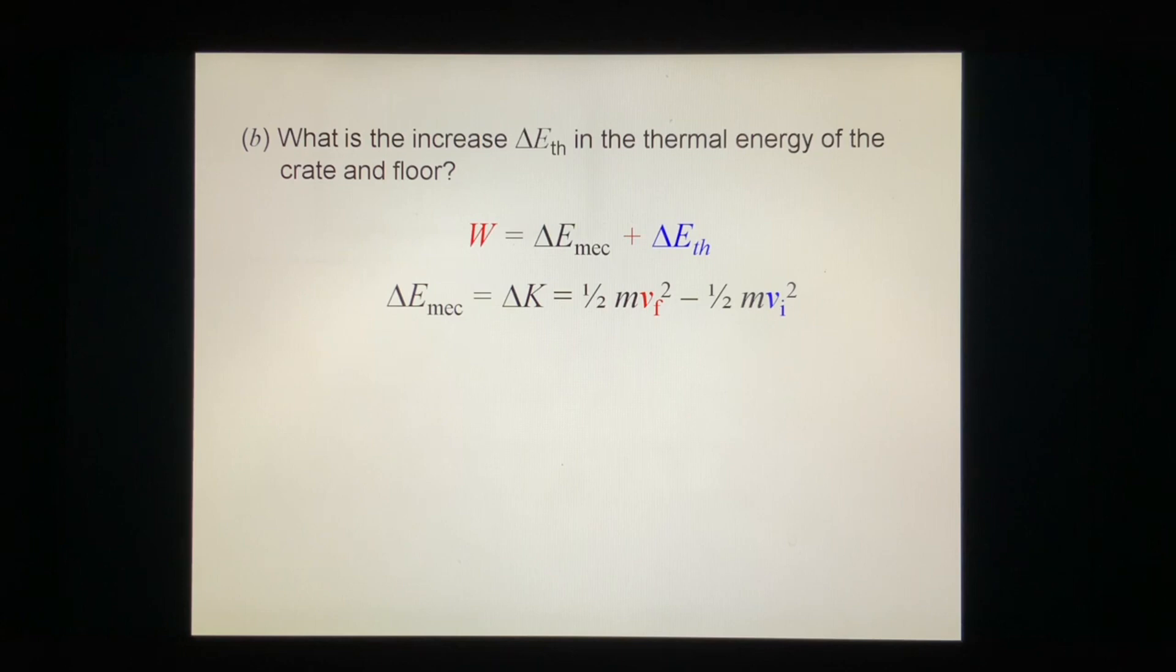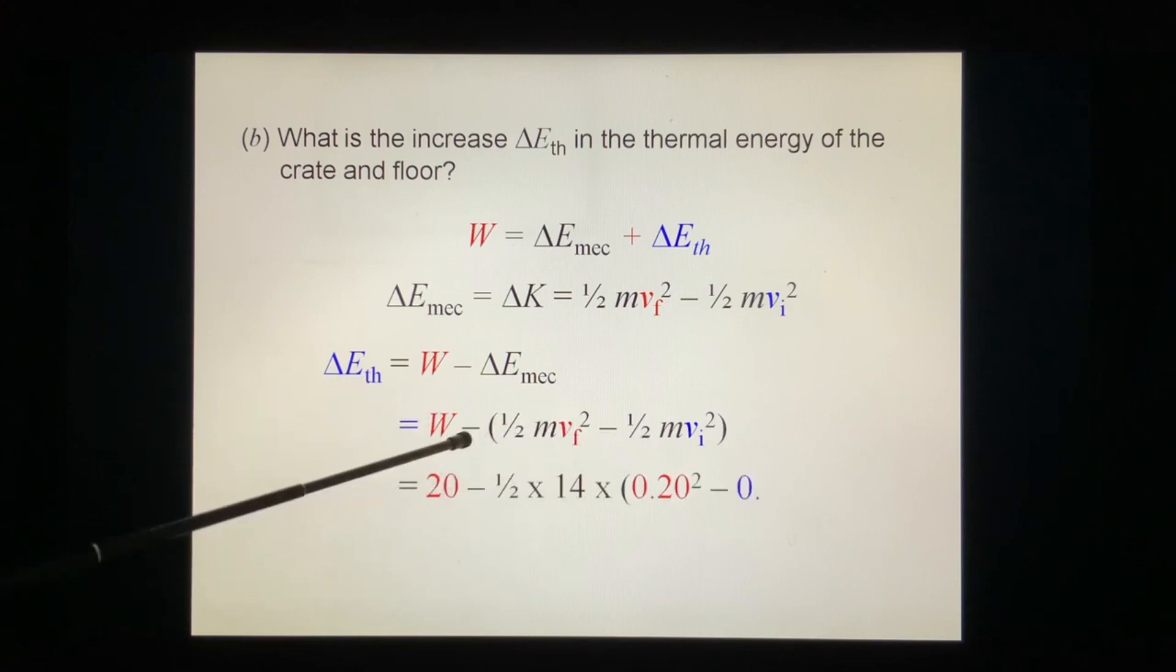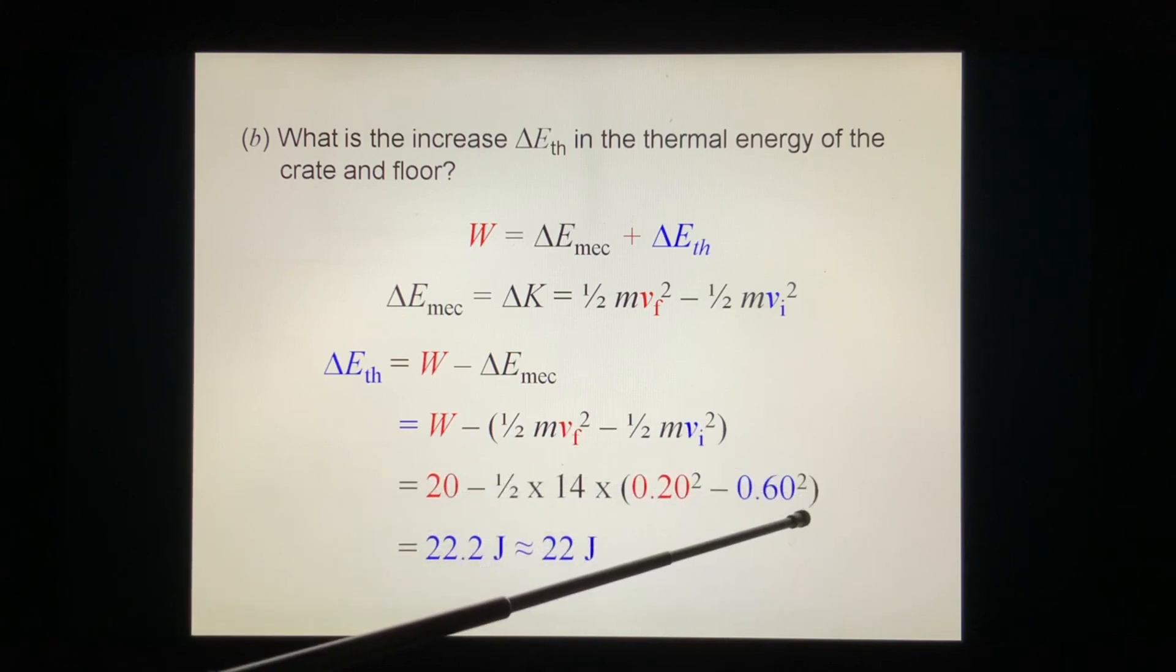ΔE_mec equals its final kinetic energy minus initial kinetic energy. In our case, no potential energy involved. This is what we want to find, so ΔE_th = W - ΔE_mec. We calculate: W is 20 J, and the kinetic energy change is ½m (v_f² - v_i²). v_final is 0.20, v_initial is 0.60. We get 22.2 J. We take two significant figures, so we drop the decimal to get 22 J.